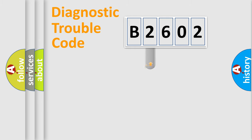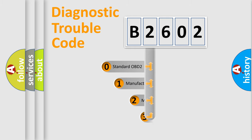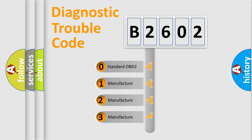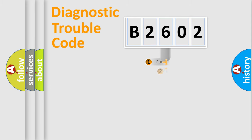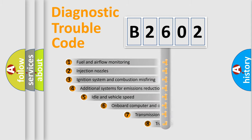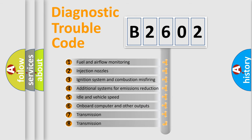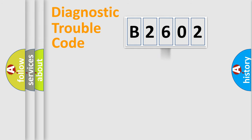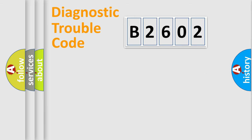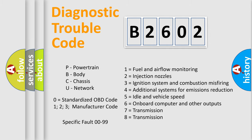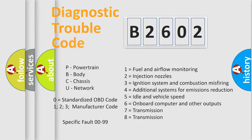This distribution is defined in the first character of the code. If the second character is zero, it is a standardized error. In the case of numbers 1, 2, or 3, it is a manufacturer-specific error. The third character specifies a subset of errors — this distribution is valid only for standardized DTC codes. Only the last two characters define the specific fault within the group, and this division applies only when the second character is zero.